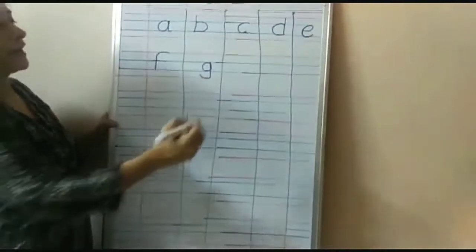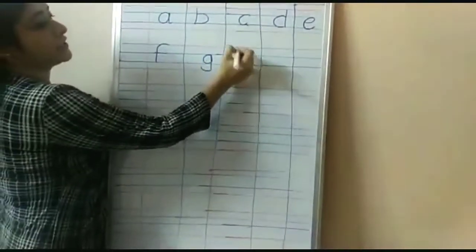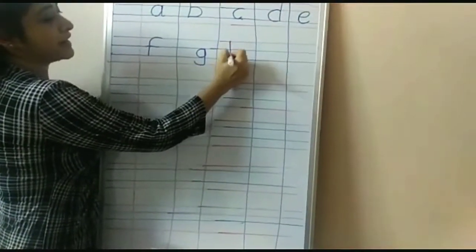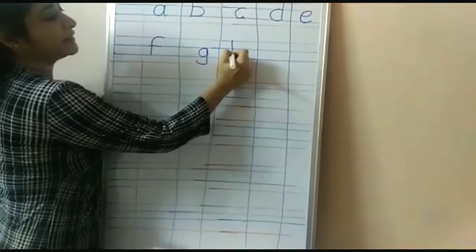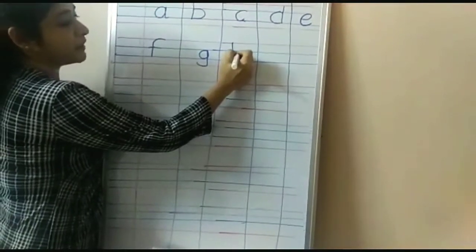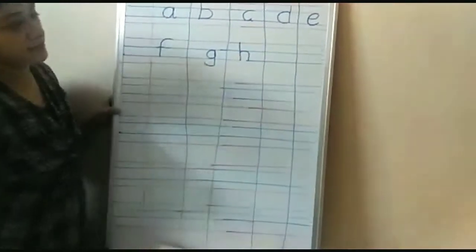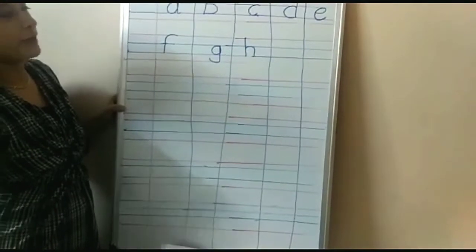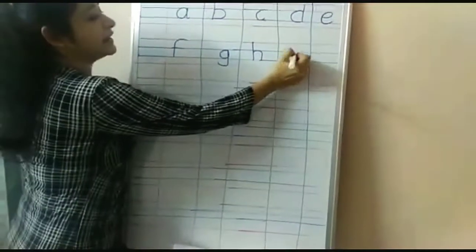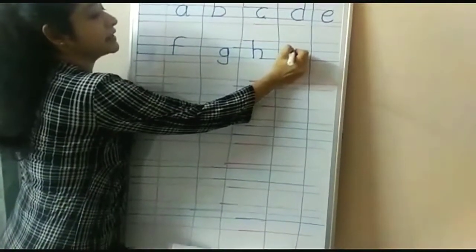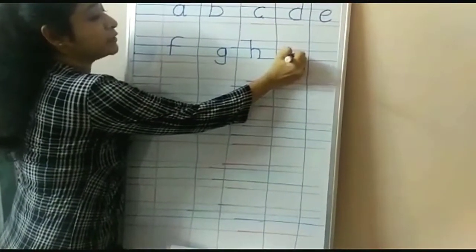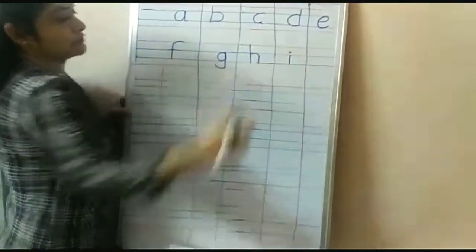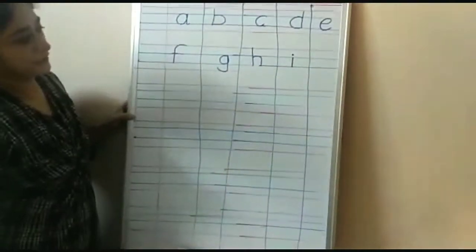Now we'll write H. Red line to blue line. Make a standing line and make a round like this. Now we'll write I. Blue line to blue line, and put a dot on it.